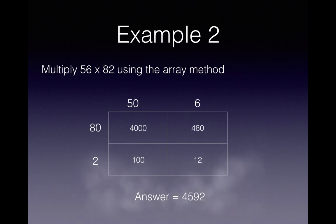Add those together and they'll give you an answer for 56 multiply by 82 gives you 4592.